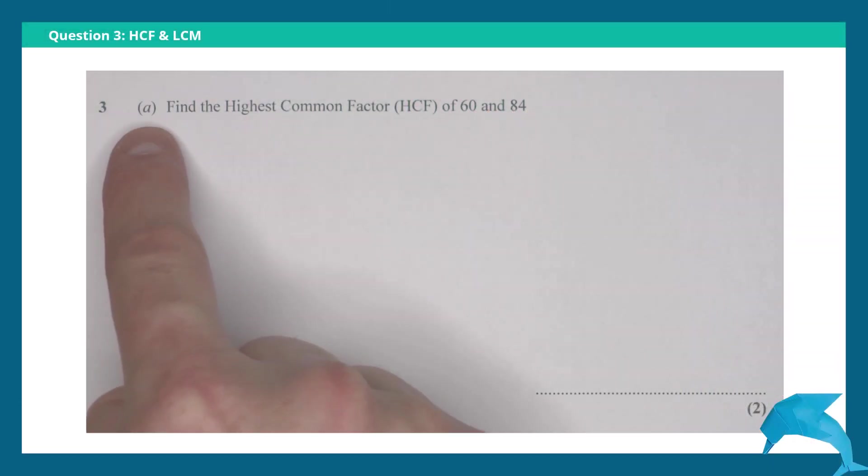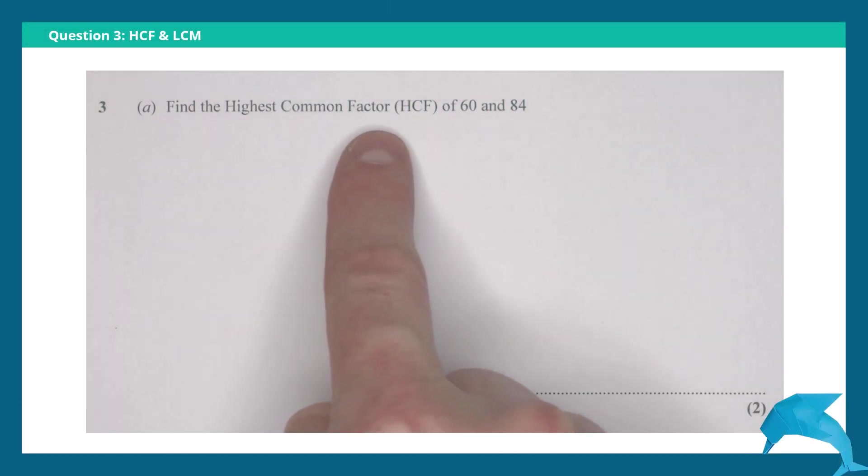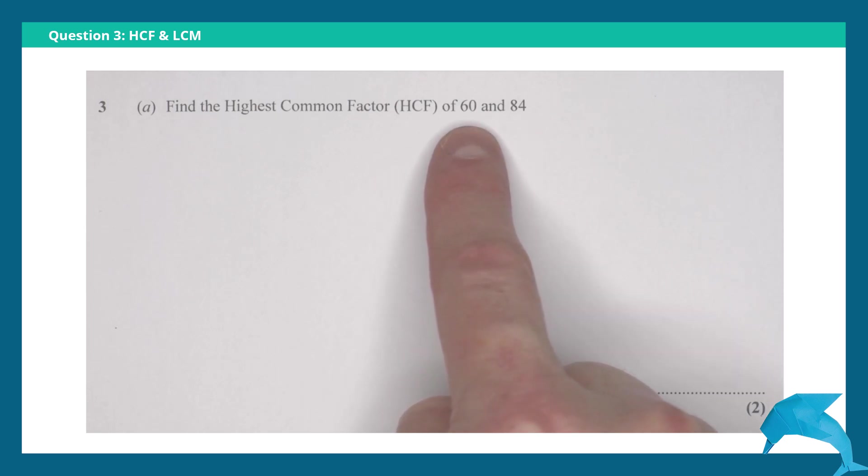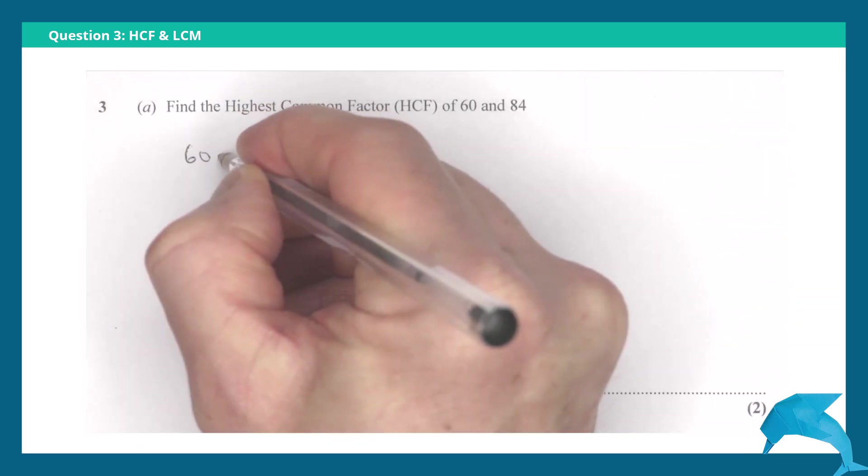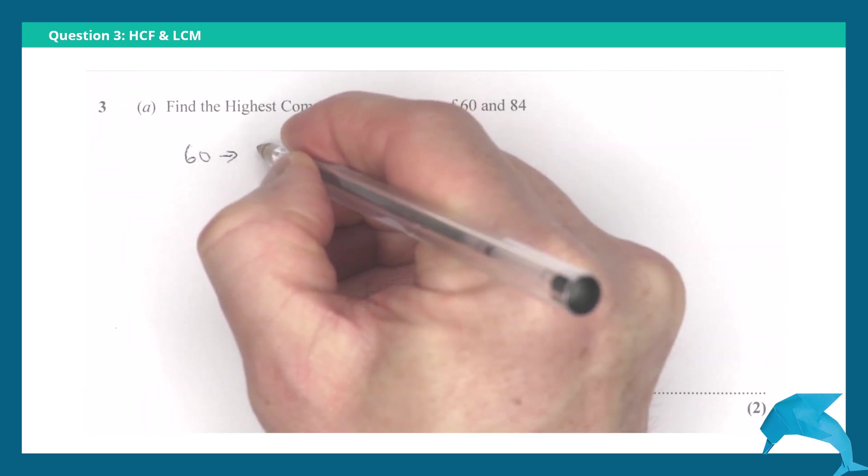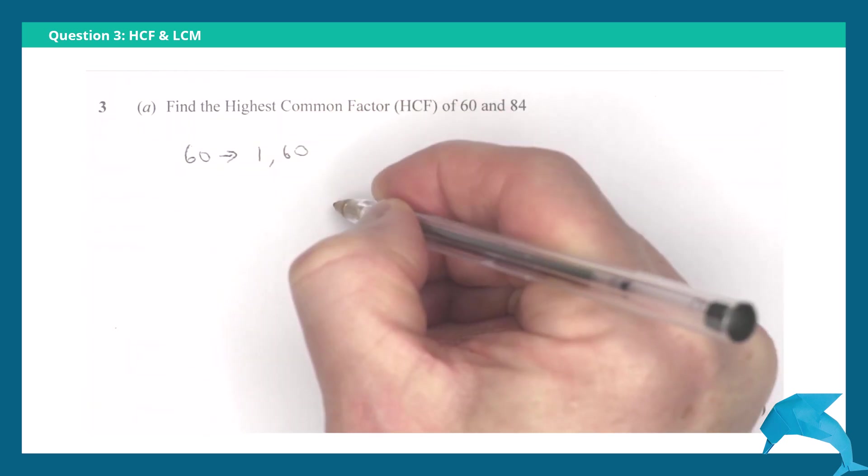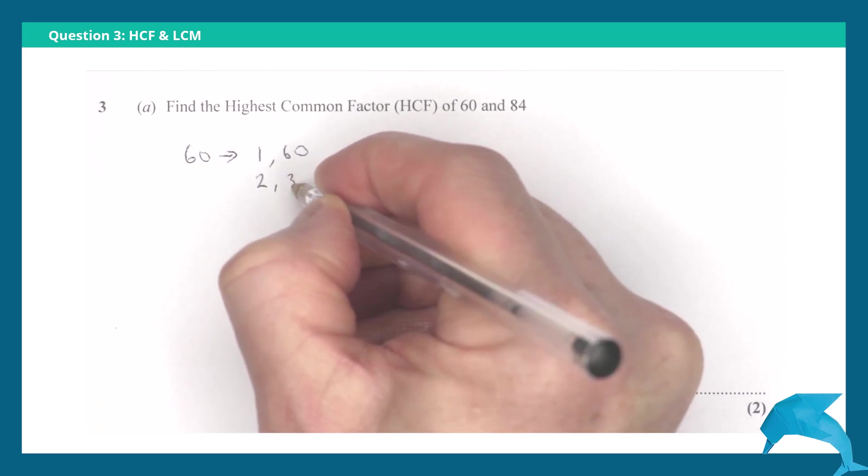Question 3 part a: Find the highest common factor (HCF) of 60 and 84. Let's find the factors as pairs of 60 and 84. So 60, that's 1 multiplied by 60, so 1 and 60. 2 multiplied by 30, so 2 and 30.